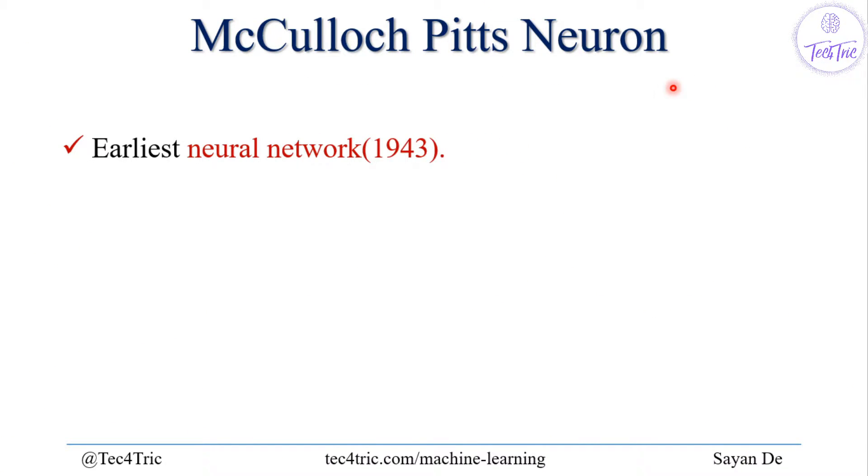The McCulloch-Pitts Neuron was the earliest neural network proposed in 1943. It is usually called the MP Neuron. The McCulloch-Pitts Neurons are connected by directed weighted paths. You will understand this when I show you the diagram.